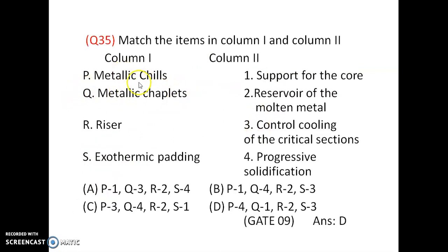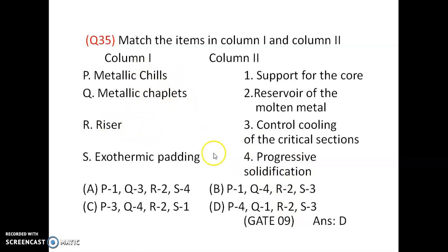Match the following: metallic chills, metallic chaplets, riser, and exothermic padding. Metallic chaplets are used to support the core (Q1). Metallic chills are used for directional or progressive solidification (P4). The riser is a reservoir of molten metal to compensate for shrinkage (R2). Exothermic padding is used to control cooling of critical sections (S3). Option D is correct.